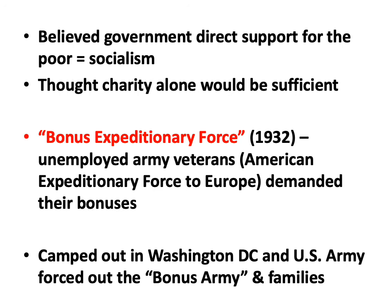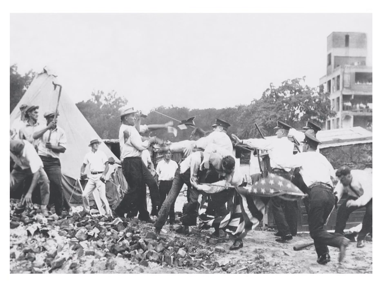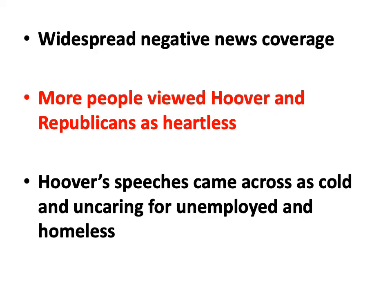Hoover instructed the U.S. Army to go in and force out the bonus army — many of whom had brought their families. There's a photo of the bonus army being evicted. He also asked for cooperation from local police forces. This action led to widespread negative news coverage by the newspapers, and people viewed Hoover and, by extension, the Republicans as heartless.